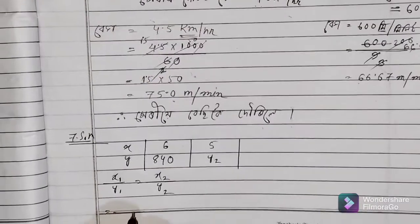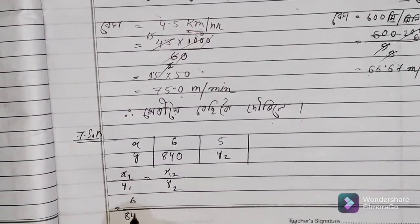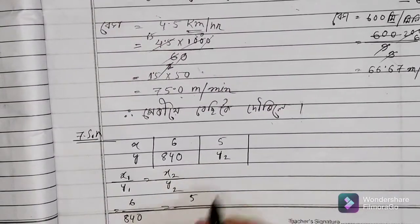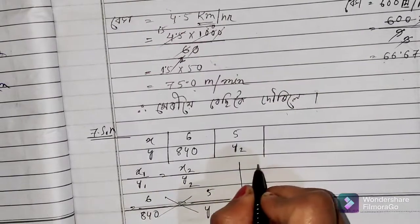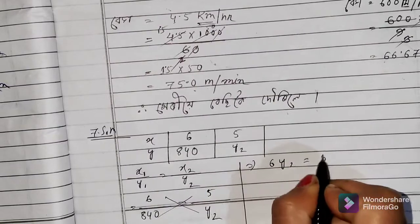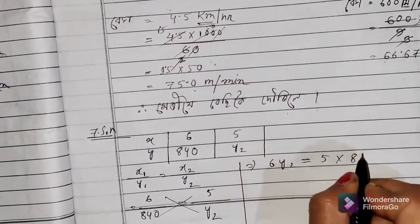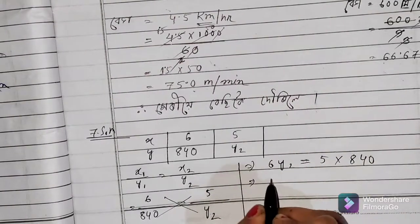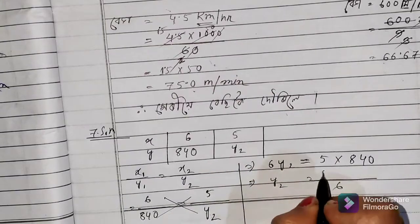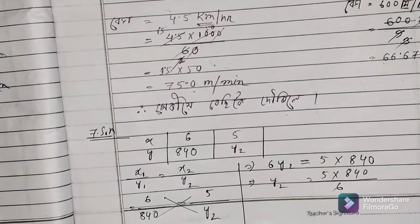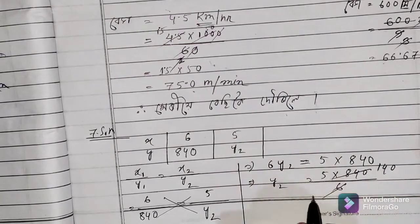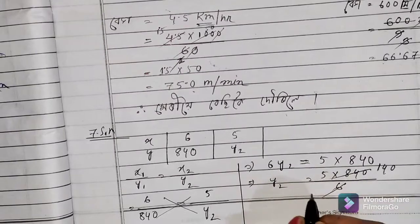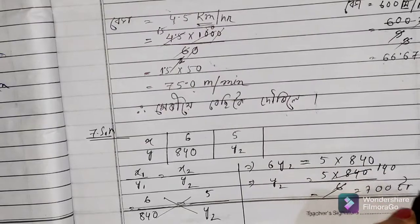So x1 is 100, y1 is 180, x2 means 5, and y2 means 840. This means y2 is equal to 5 into 840. So here, 200 divided by 6, so 1 minus 8, and x2 is equal to 6. So 1 minus 4 is equal to 4, and x2 is equal to 5 into 4, so 1 minus 4 is equal to 5.